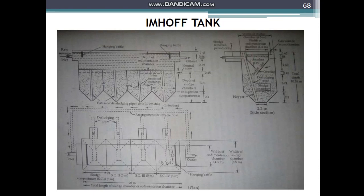Sludge is removed under hydrostatic pressure of 1.2 to 1.8 metres. Not all the sludge is removed — only the bottom layers that are completely digested are withdrawn, leaving some sludge to keep the tank seeded with anaerobic bacteria so that anaerobic digestion continues properly. The removed sludge may be dried and disposed of in a sanitary manner. To ensure uniform distribution of solids in different hoppers, the flow of sewage in the sedimentation compartment is reversed intermittently, as indicated by the arrows in the diagram.